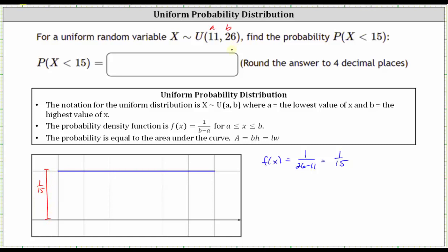Next, we know the minimum is 11 and the maximum is 26. Notice how the width of this interval is 26 - 11, which is 15. This should make sense because we know the total area must be equal to one. Using the formula base times height for the rectangle, notice 15 times 1/15 equals one.